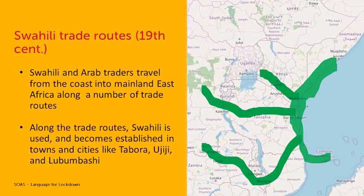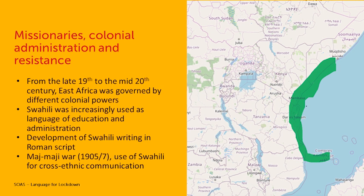Along these trade routes, Swahili was used and then became established in towns and cities like Tabora, Ujiji, or Ujumbashi. Around the same time, we also see the appearance of Christian missionaries from Europe and colonial administration, but also resistance to that administration. All these three dynamics are related in many ways to the Swahili language. From the late 19th to the mid 20th century, East Africa was governed by different colonial powers — English, German, Belgian, Portuguese.